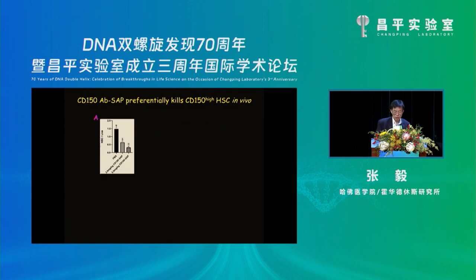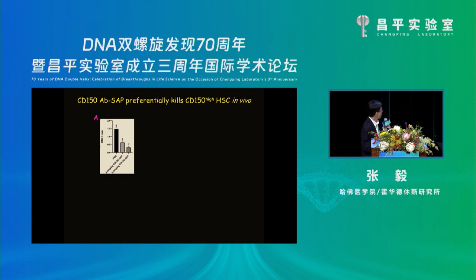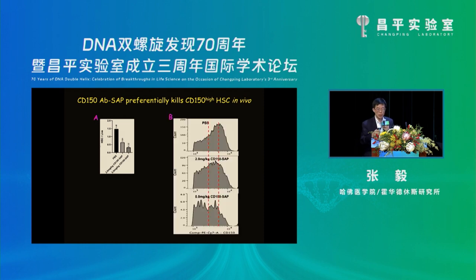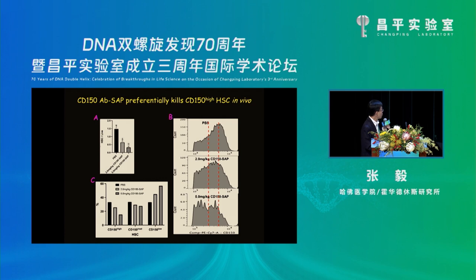For the in vivo assay, we injected this antibody-toxin complex through the tail vein into old mice. We see dose-dependent killing of HSCs, and importantly the distribution shifts: CD150-low increases and CD150-high decreases. We are now waiting for the mice — probably at least half a year — to test whether they get rejuvenated.